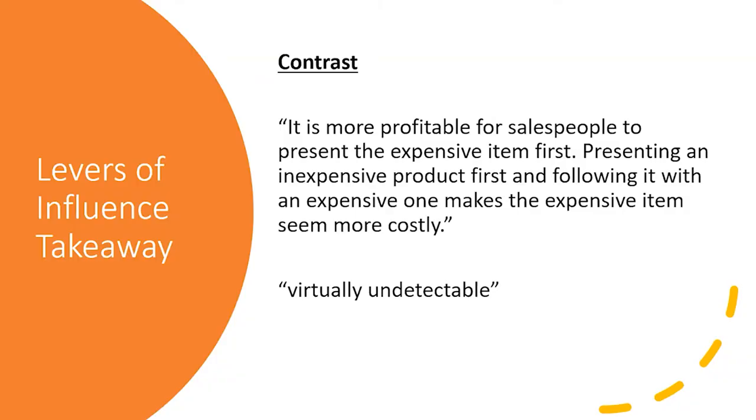It works the other way too — if you start big and go small, people feel like it's weak. When it comes to pricing, if you're trying to sell a piece of jewelry, show the expensive item you don't actually want to sell first, then show the price point you do want to sell at. Even if it's average middle-of-the-road pricing, it's going to seem way cheaper by contrast. To reiterate: it's not enough to just show two different things — you have to order them based on how you want the person to perceive the value of the second thing shown. It is more profitable for salespeople to present the expensive item first.